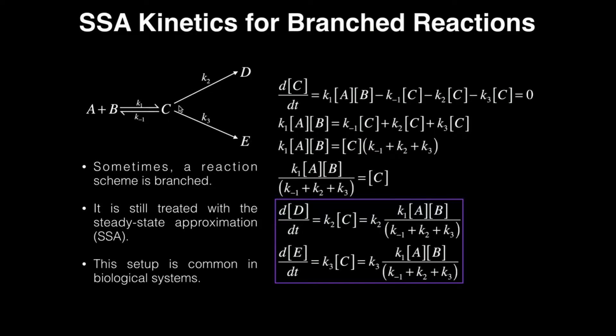And then C can actually branch off in one of two directions. If it branches towards D, it's described by the rate constant K2. If it branches to E, it's described by the rate constant K3. And so what we want to do is derive the rate of formation of D, and then also separately the rate of formation of E.